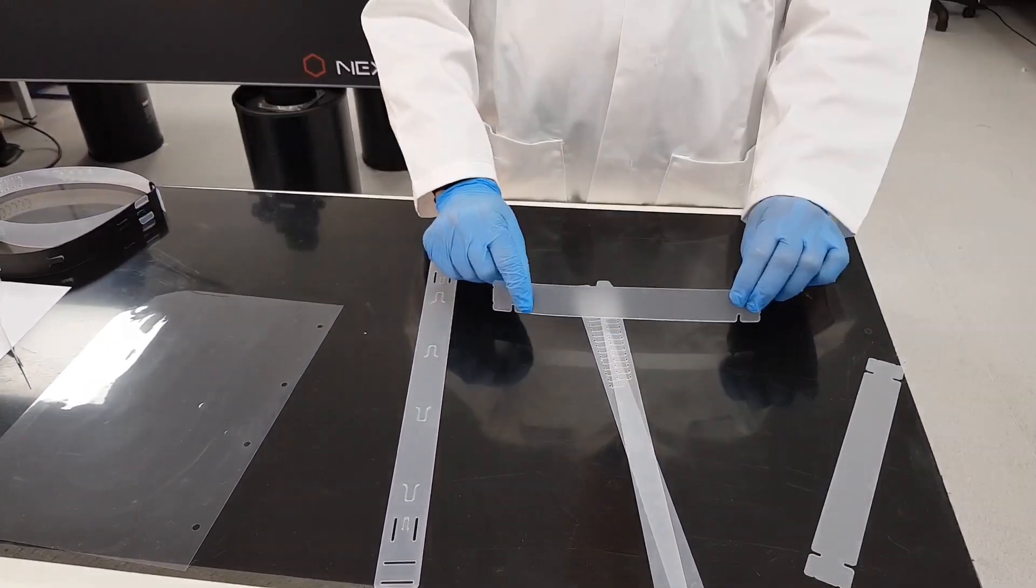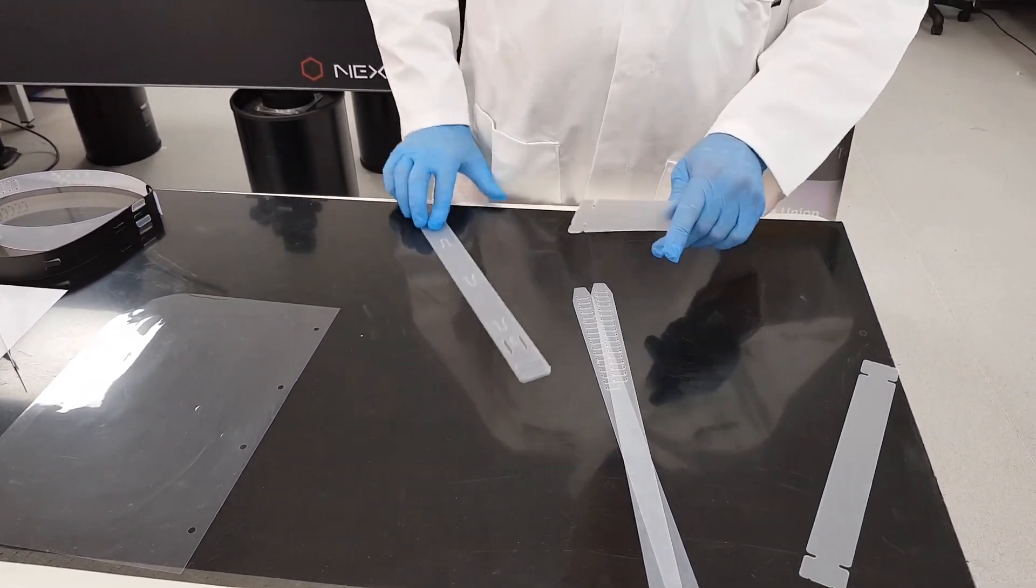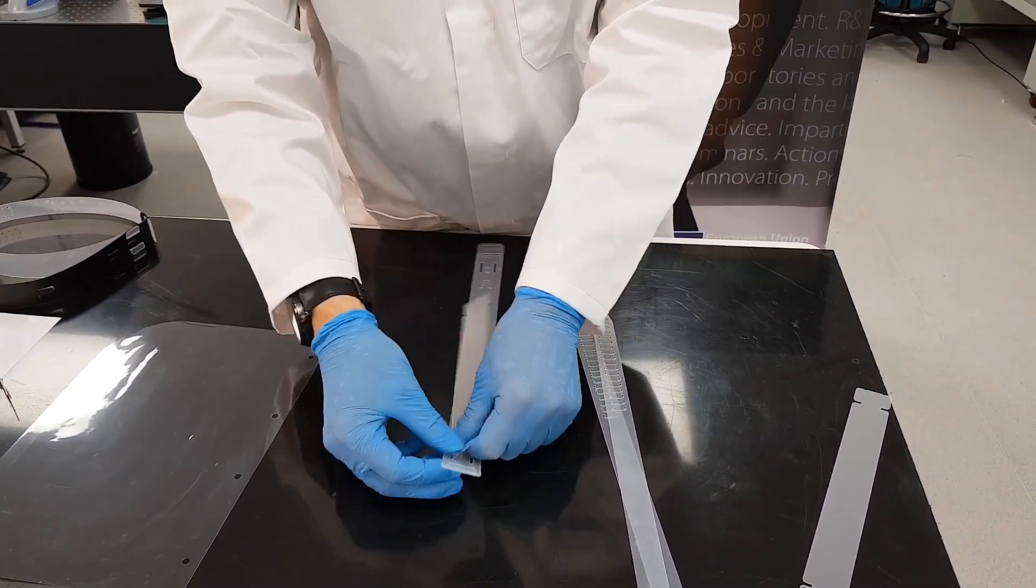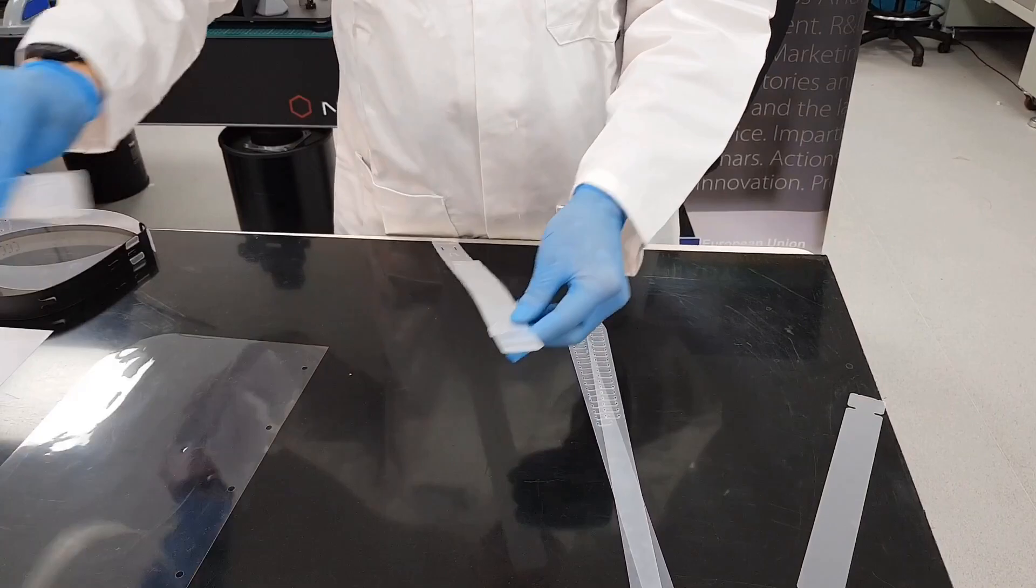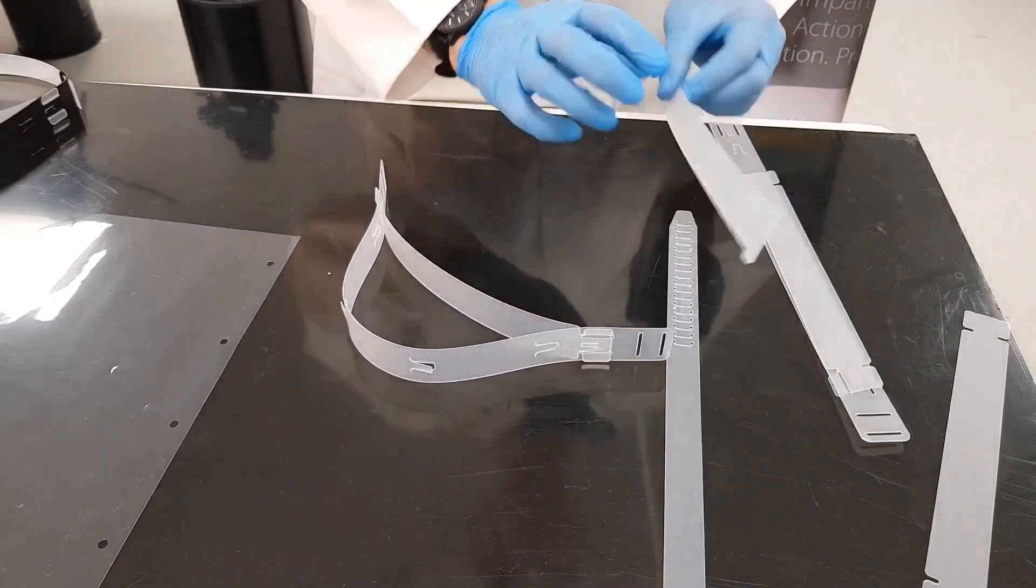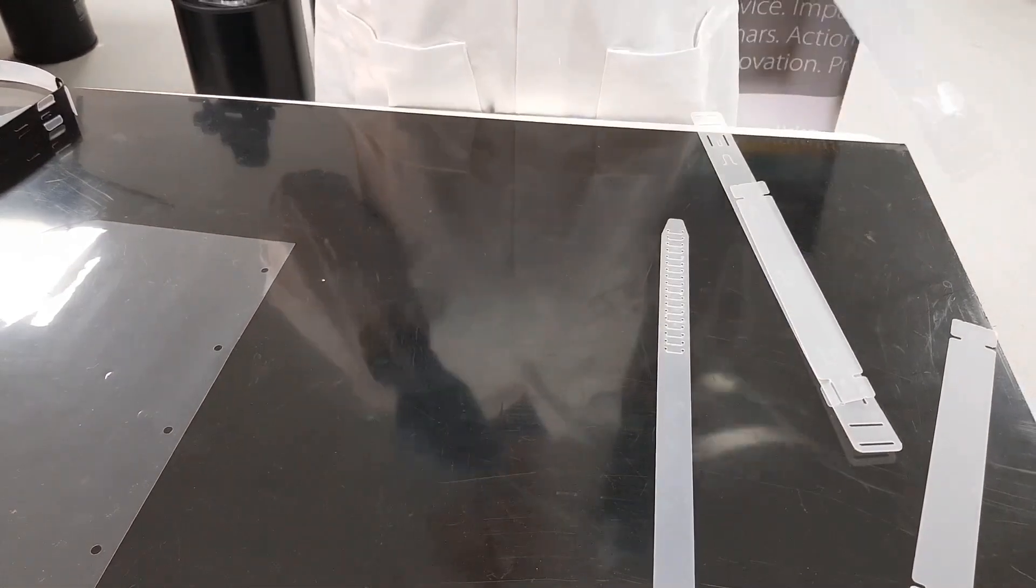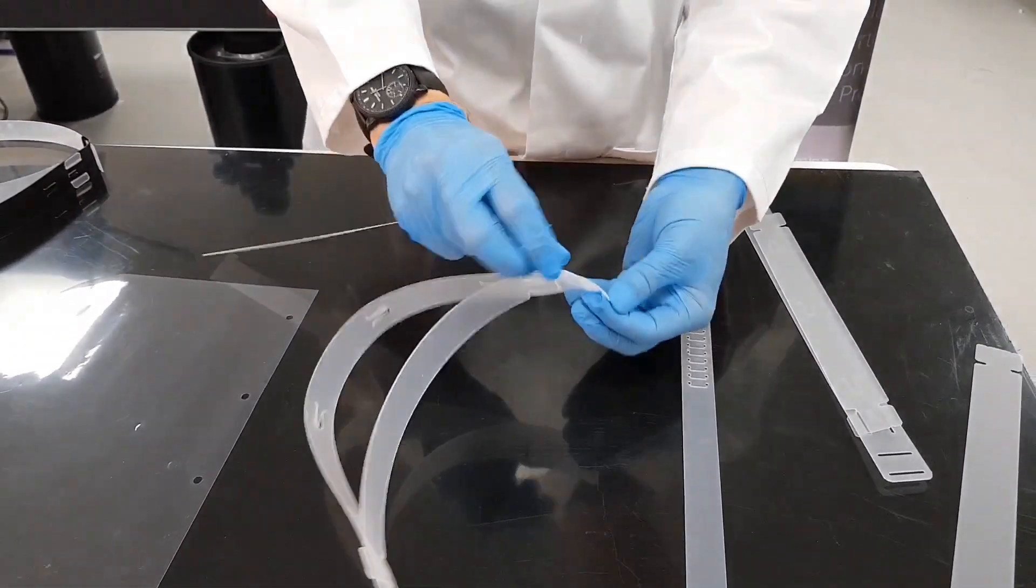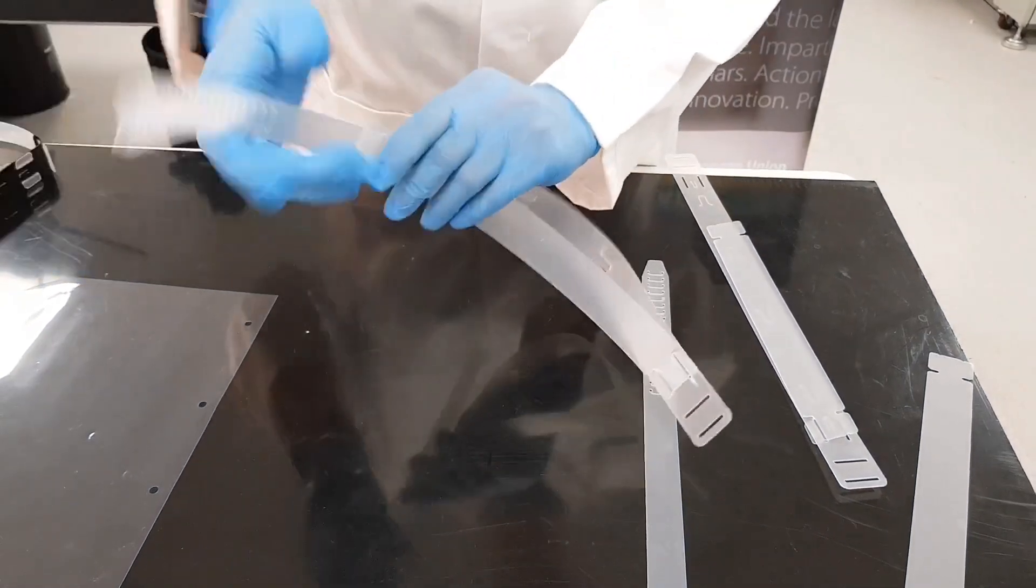Take the headband and the fixing strap. You insert the first part into there and there like so. Once you've done that, take the fixing strap and feed it through the two slots that are there. This can then be adjusted to suit any size.